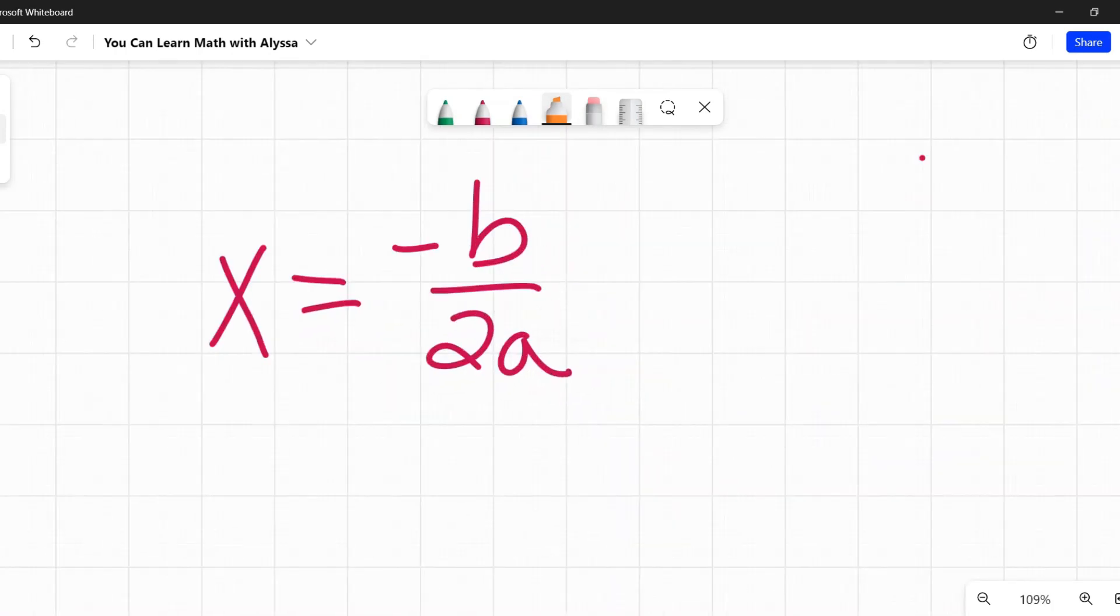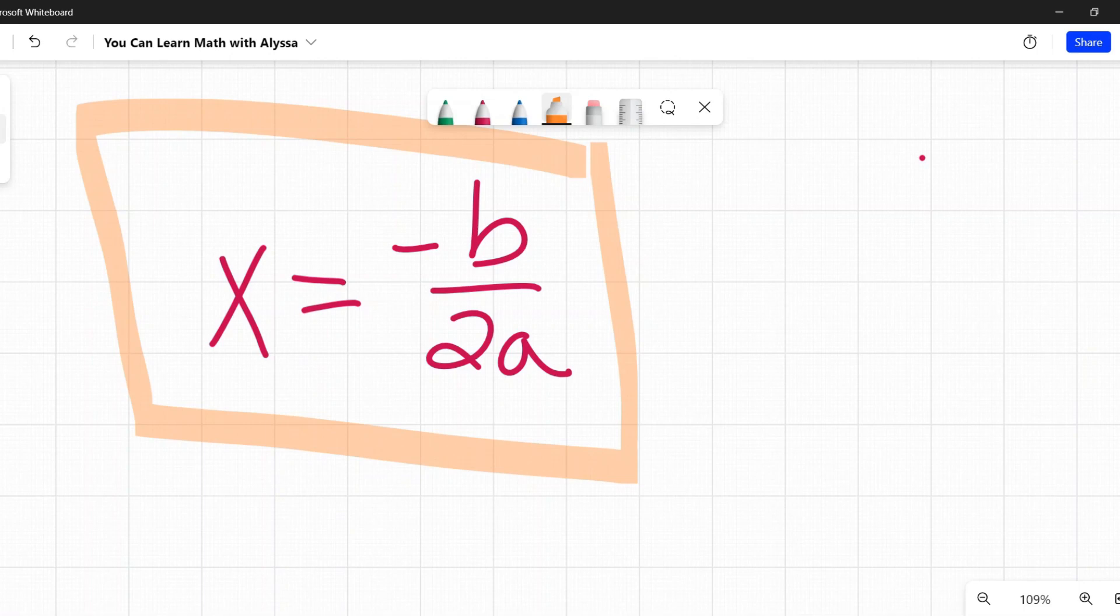So x equals negative B over 2A, stick it in your memory, tuck it away. It will come back in other problems. It's a helpful thing to know. And again, just pay really close attention to this negative on top. Be careful, you're doing the opposite of that central B, and then you'll have your answer.